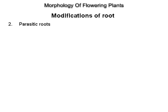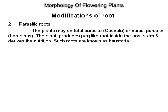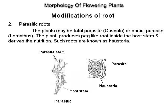Parasitic roots. The plants may be total parasites like Cuscuta or partial parasites like Loranthus. The plant produces peg-like roots inside the host stem and derives nutrition. Such roots are known as haustoria.